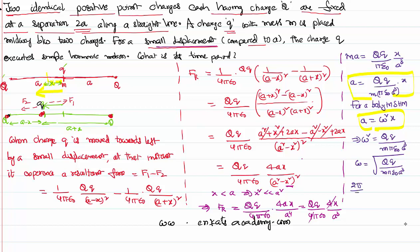Since angular velocity ω = 2π/T, we have 2π/T = √[Qq/(mπε₀a³)]. Solving for the time period T: T = 2π × √[mπε₀a³/(Qq)]. That is how we solve the problem.